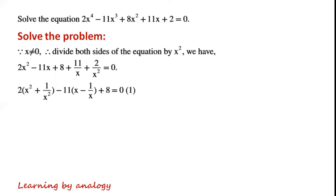We can see that there is a term 2x² and a term 2 over x², so we can write 2 times (x² plus 1 over x²). Similarly, the terms 11x and 11 over x have a common factor 11, so we can write minus 11 times (x minus 1 over x).